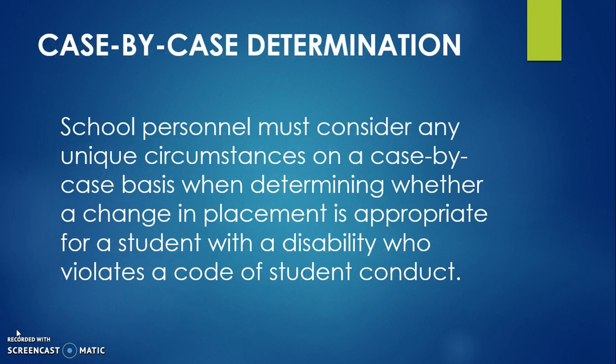The campus administrator must consider any unique circumstances on a case-by-case basis when determining whether a change in placement is appropriate for a student with a disability who violates a code of student conduct. In other words, school administrators may choose not to apply discipline to a student whose behavior seems clearly to be caused by a disability.